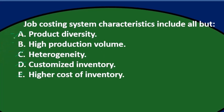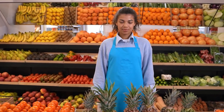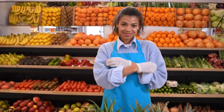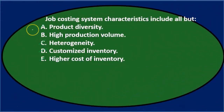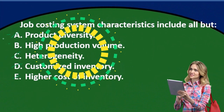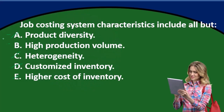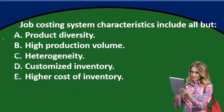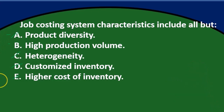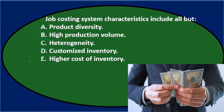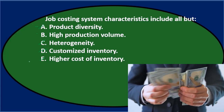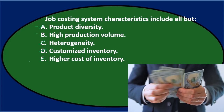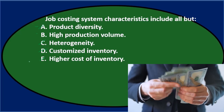Product diversity means there's going to be different types of products, customization means there's going to be different types of products we're making, and heterogeneity means there's different types of products — all that differentiation. So these three could cancel each other out if we look at this in terms of test-taking skills; they pretty much all look the same, so they must be gone. The higher cost of inventory follows from the fact that they're all different in nature, which is different from being all the same, which would make it easy to produce and therefore cheaper.